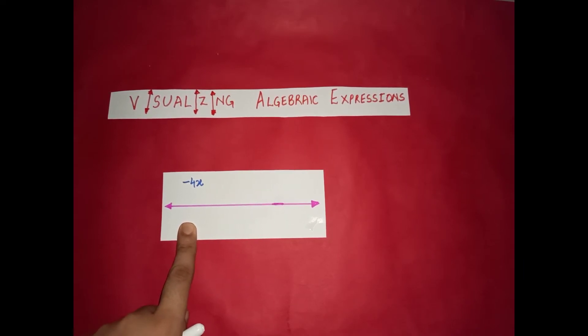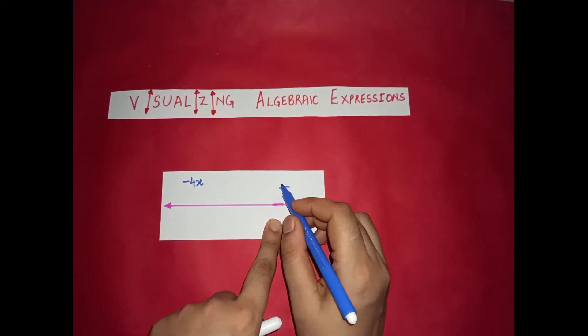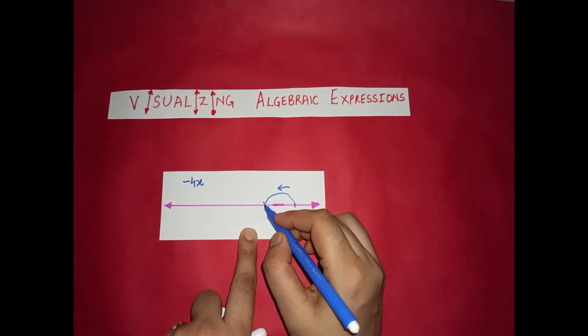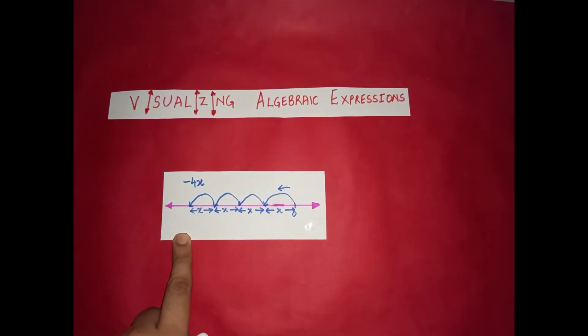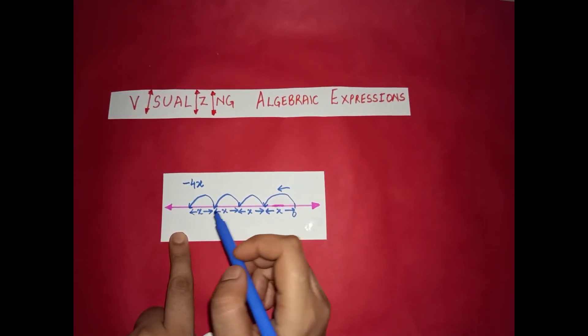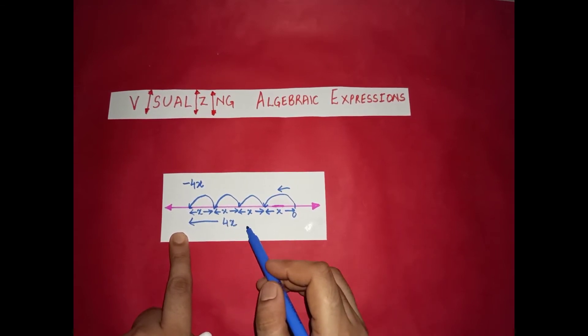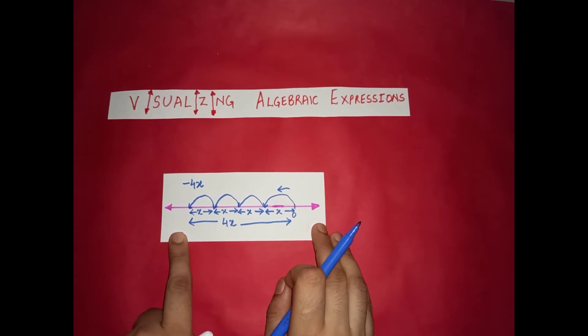Negative 4x means if this is 0 then we have to move in this direction. So we will make 4 jumps of x in the negative direction. It is x units left of 0. So this is the visualization for negative 4x. Distance covered is 4x but in the negative direction. Distance is always positive. So distance covered is 4x but the expression is negative 4x.